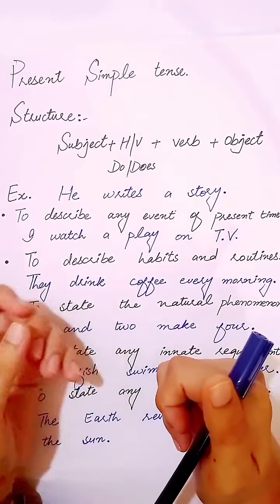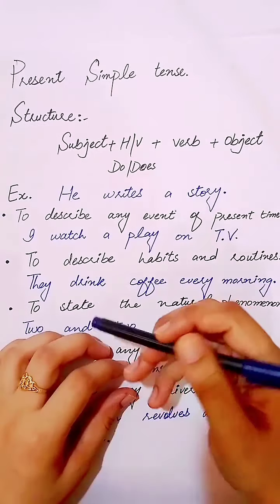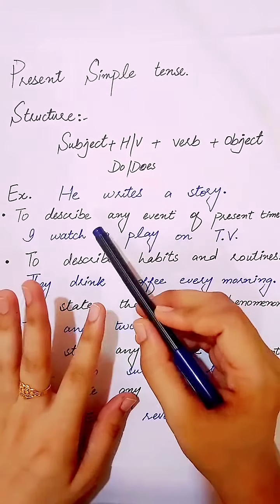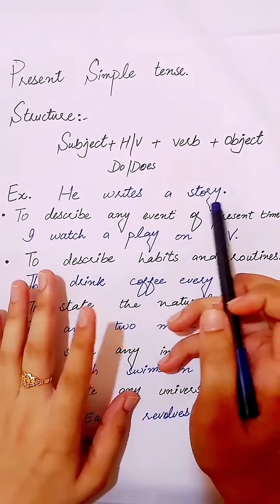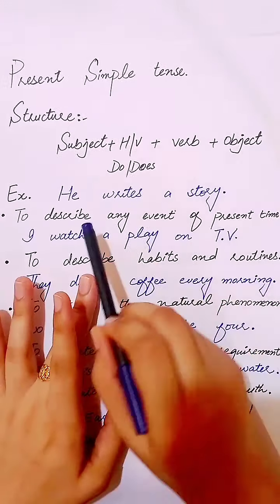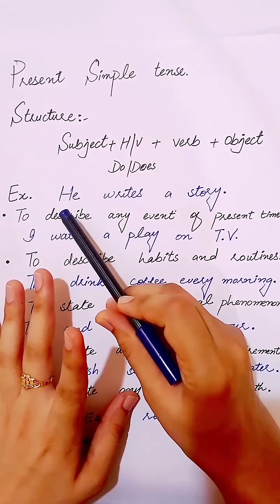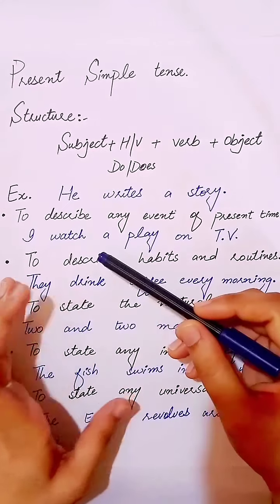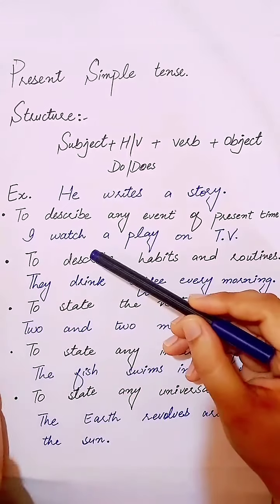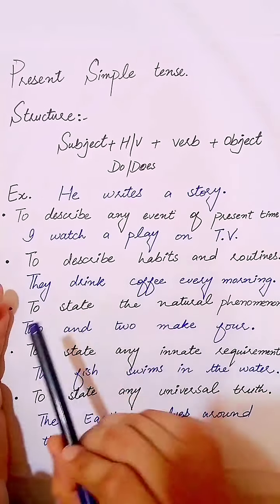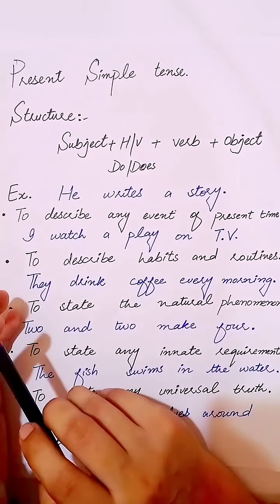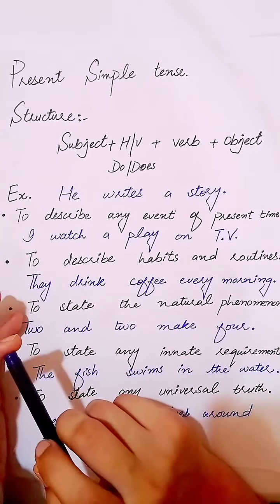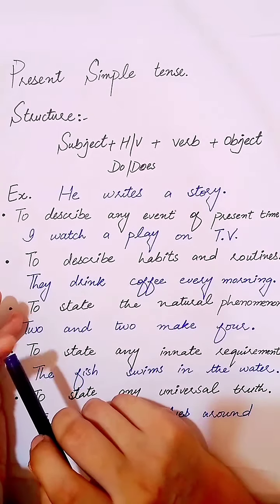Here is one example of present simple tense: 'He writes a story.' The first form plus 's' is used because the subject is singular. Here are some main uses of present simple tense. The first use is to describe any event of present time.